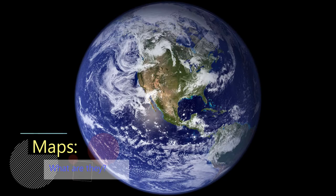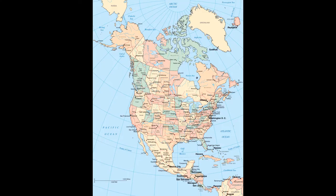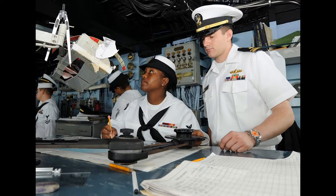Before we can learn how to use a map and a compass to help find our way, we need to understand what exactly a map is, and how is it different from a picture. Here's a picture of North America. It should look familiar. Now, here is a map of the same area. What makes the map a map? It shows the same location. The shape of the land is the same. The map is a map because it provides additional information that allows a navigator to find his way.